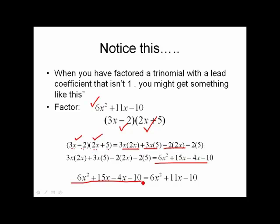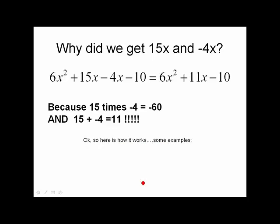That's very important why it turned out to be that way, so positive 15 and negative 4. Why did we get that? Well, if you multiply 15 times negative 4, you get negative 60. And when you combine 15 and negative 4, you get 11, which is the middle term. But wait a second, negative 60, I thought it was supposed to be negative 10. No, because of the lead coefficient. Notice what happens when you multiply 6 times negative 10, you get negative 60. And why is it 15 times negative 4? Because when you add 15 and negative 4, you get 11, which is precisely the number, the coefficient in the middle.